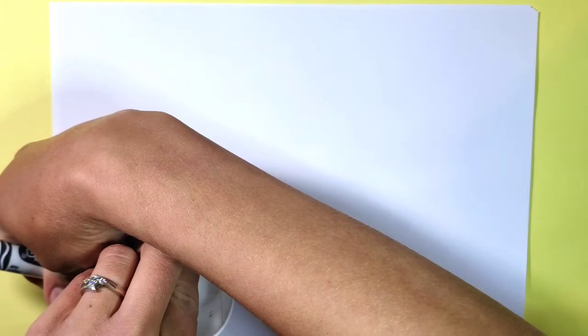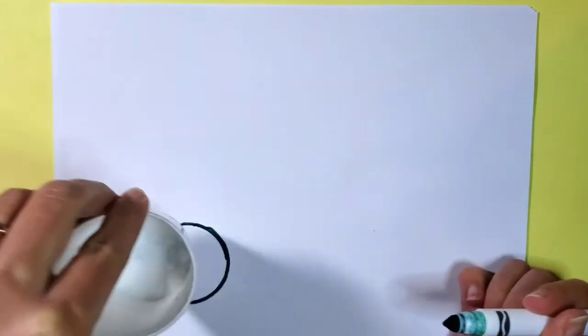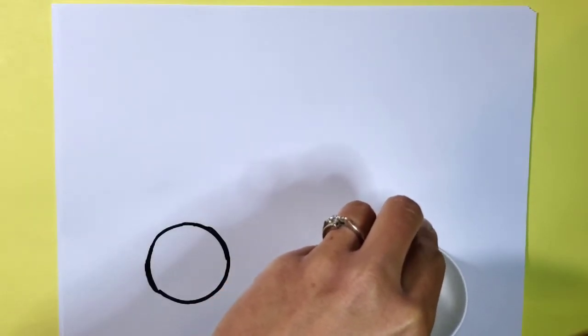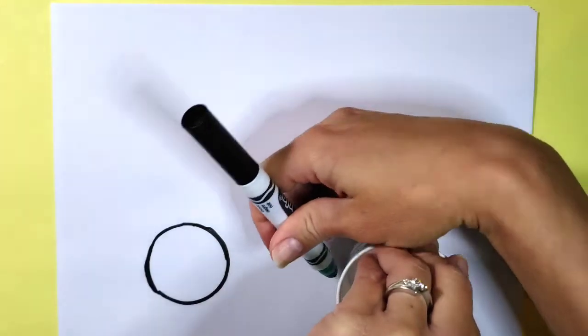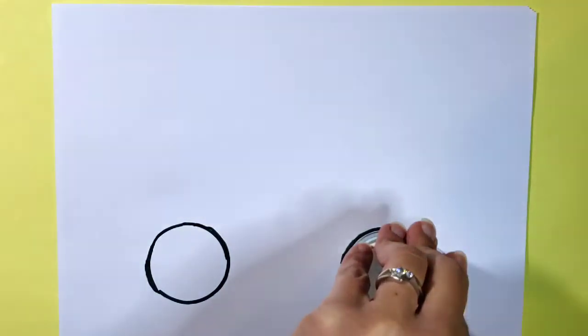If you just want to freehand your circles though, you can do that as well. So there's my first one. I'm going to go ahead and leave some space and do my second one by just tracing my cup.